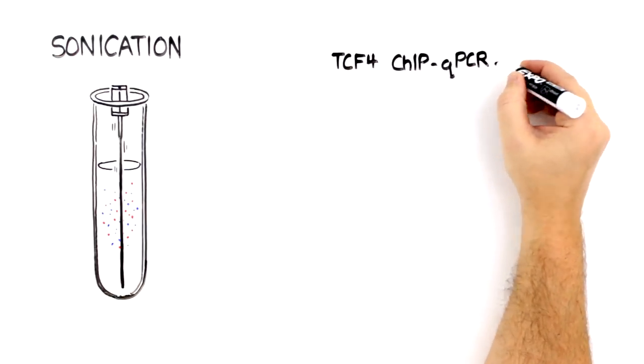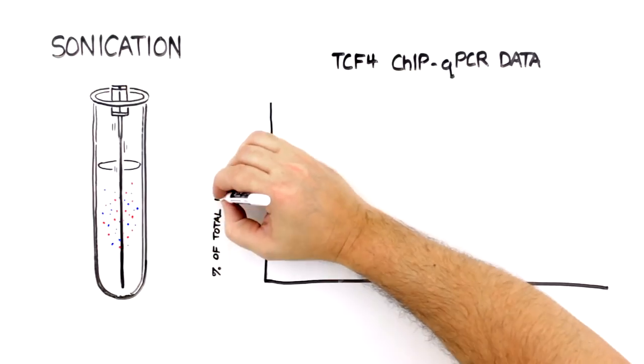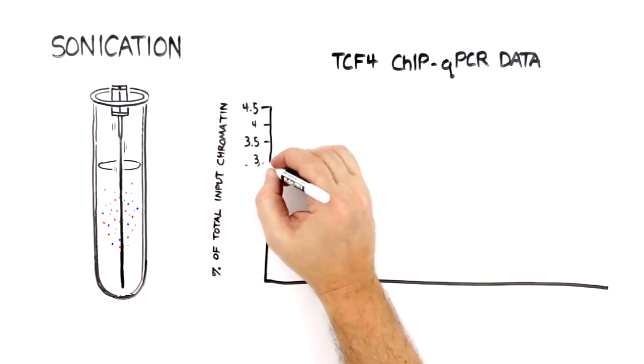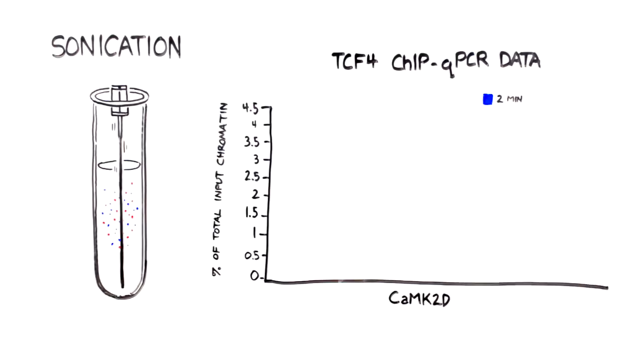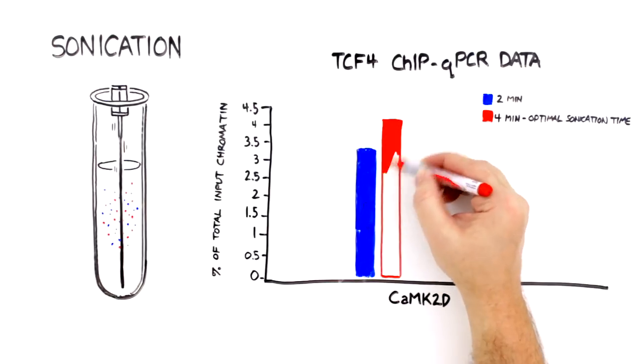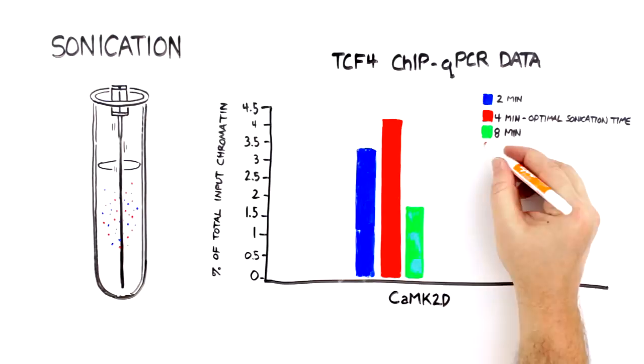A second critical step is the optimization of sonication time or sonication cycles. Ideally, you want to use the minimum number of sonication cycles to achieve properly sized chromatin fragments and maximum chromatin integrity. More sonication is not always better. As you can see in this figure, the best results are achieved with as little as four minutes of sonication.